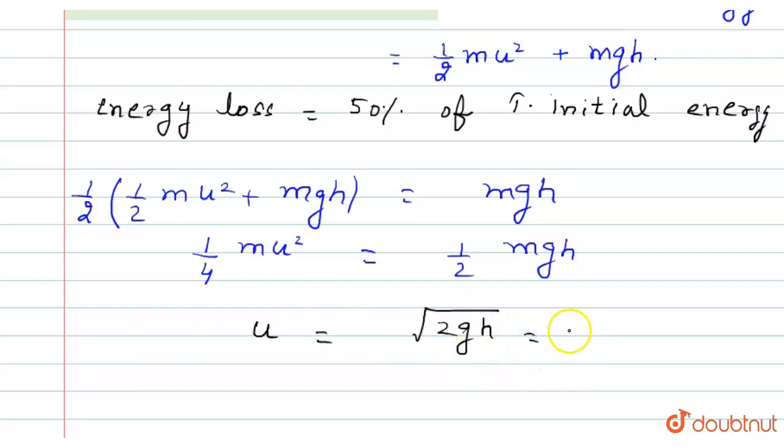Now substitute the values. g is 9.8 and height is 10, which is given in the question. By solving this, we get the value of u equals 14 meters per second.